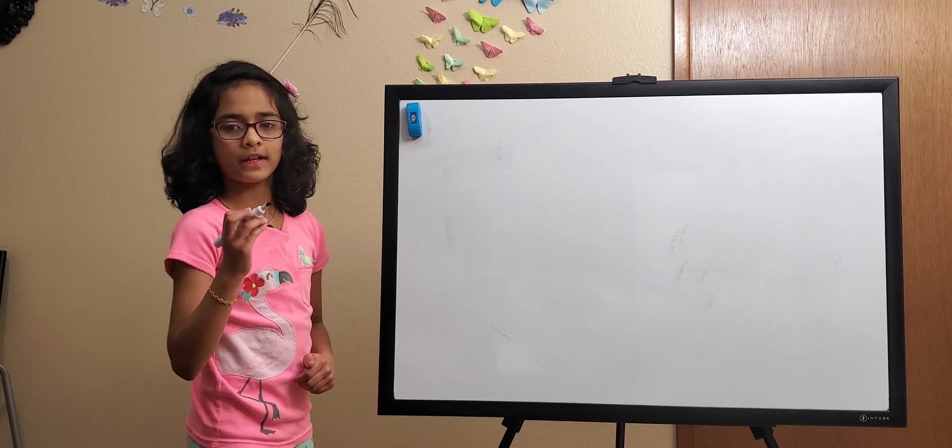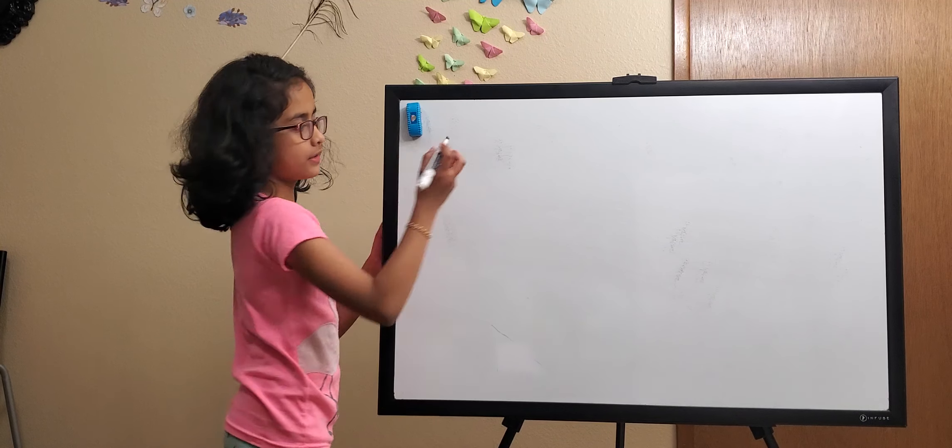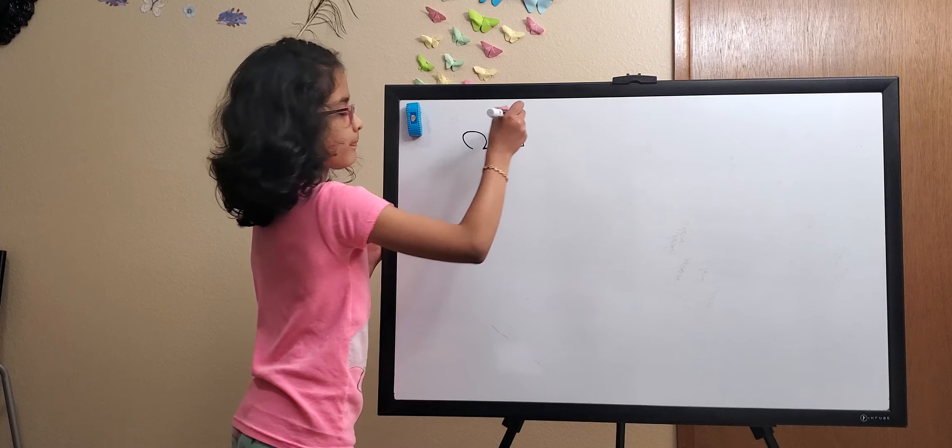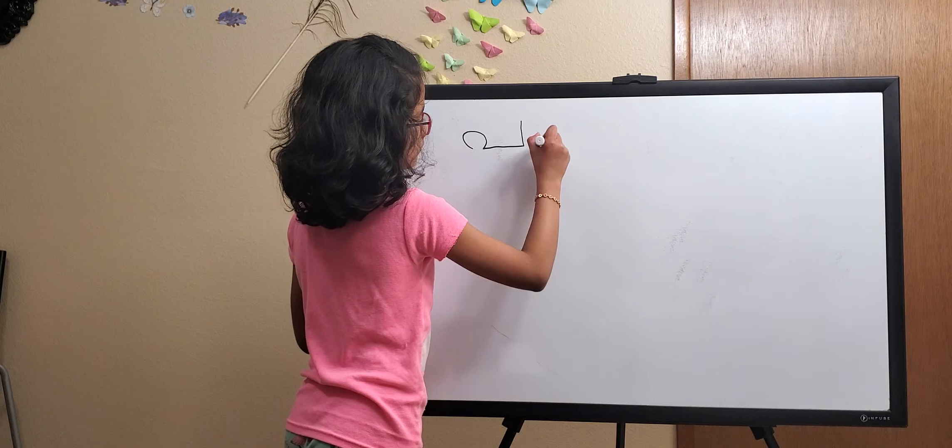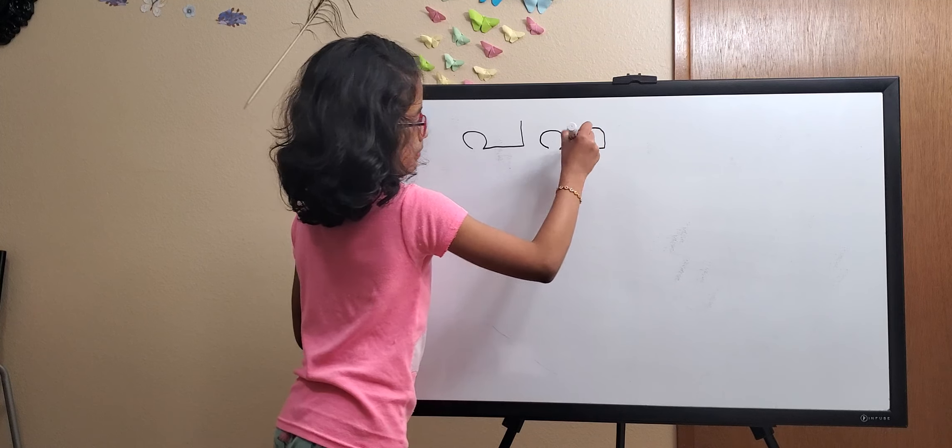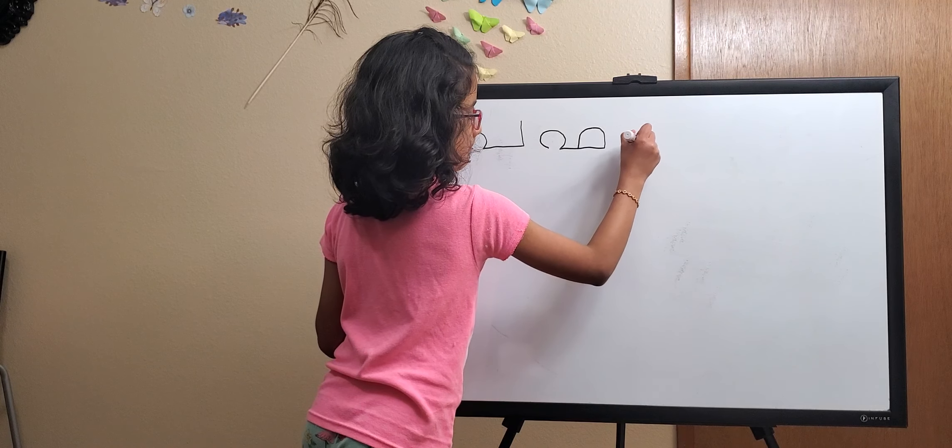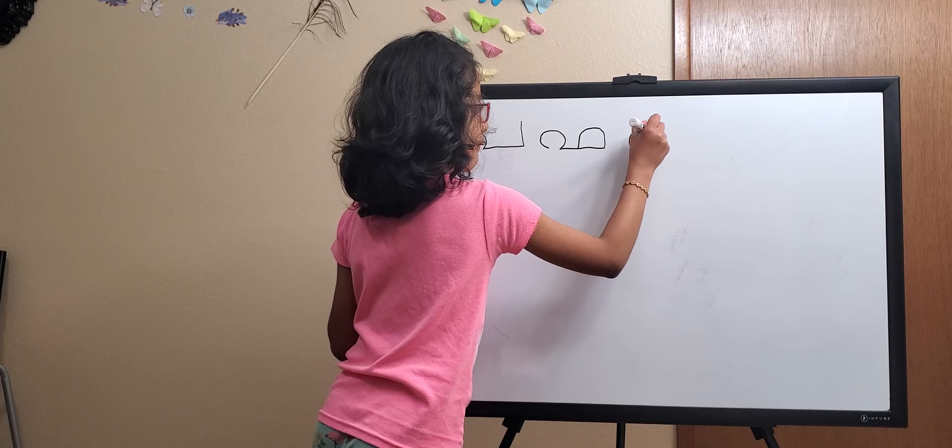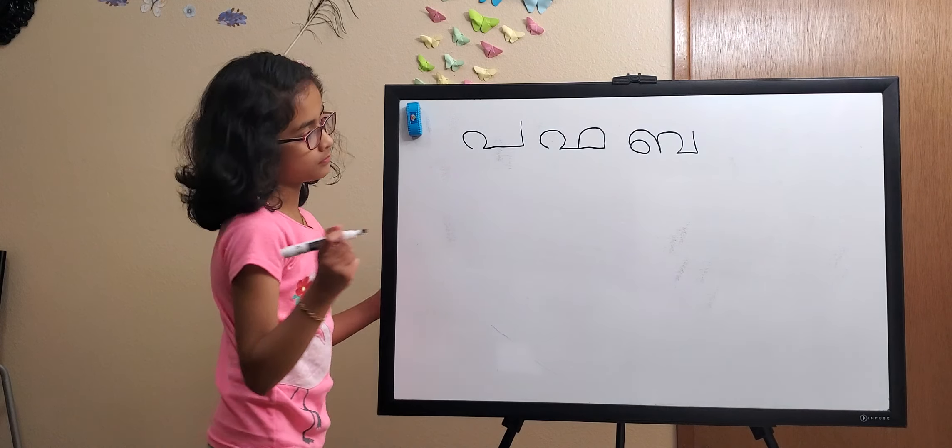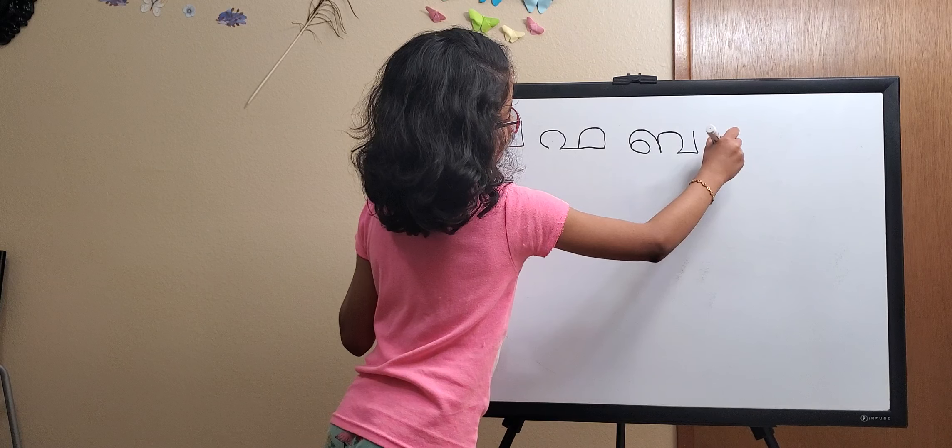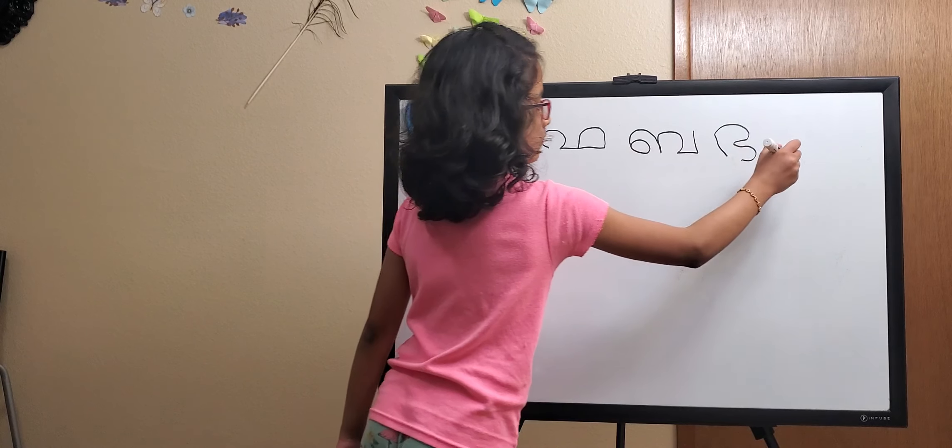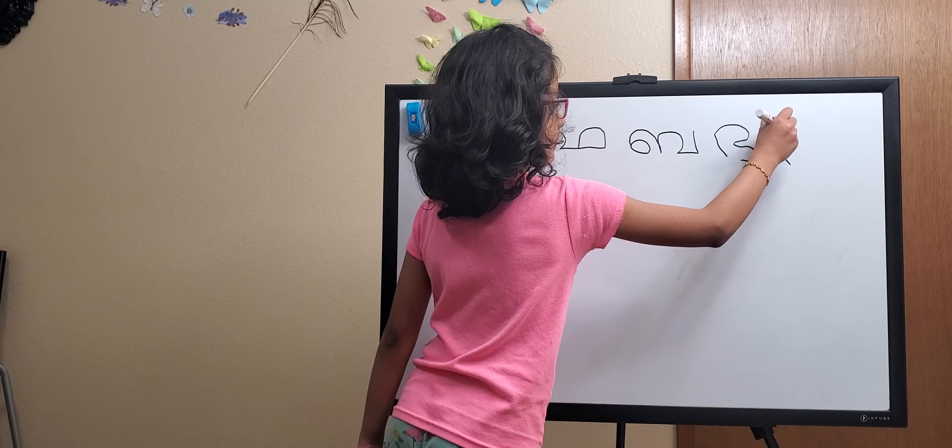So before we end, we can write all these letters and refresh. First letter was PA. PA. Then IBA. IBA.